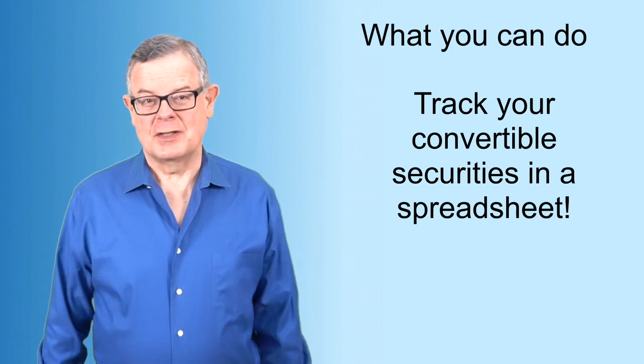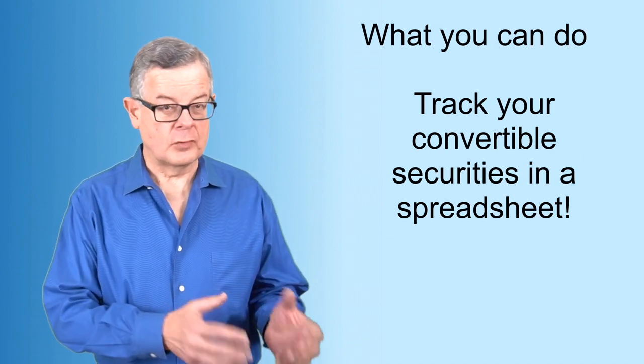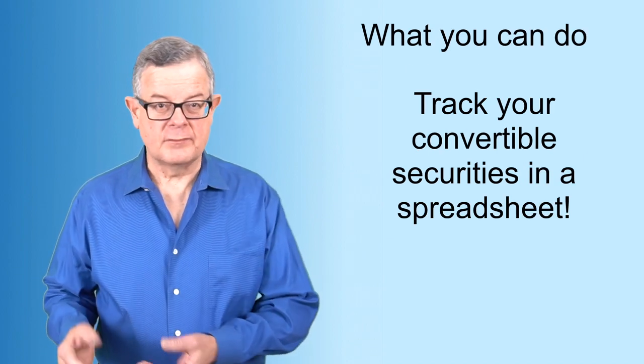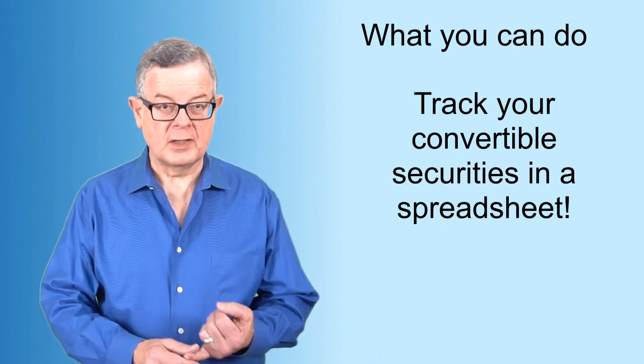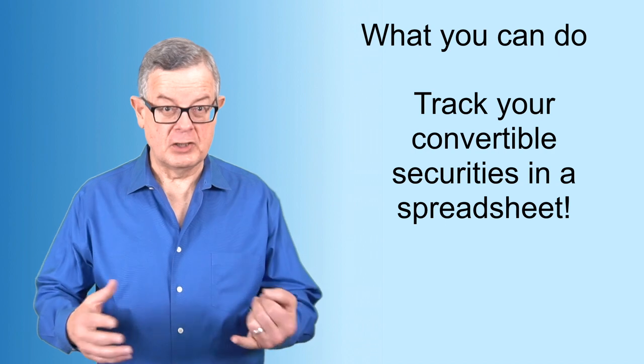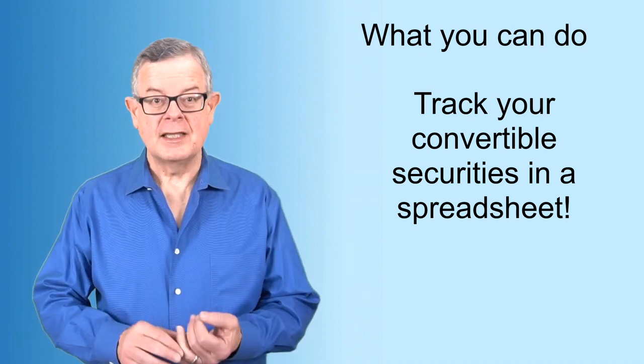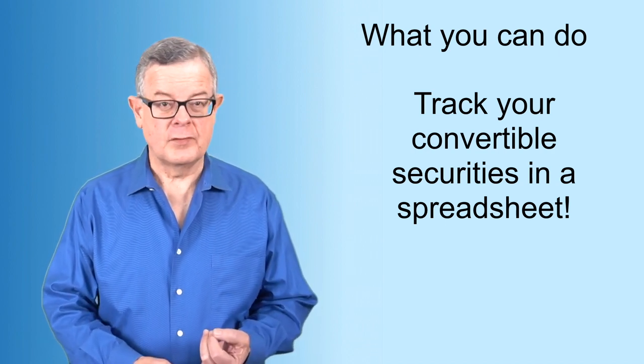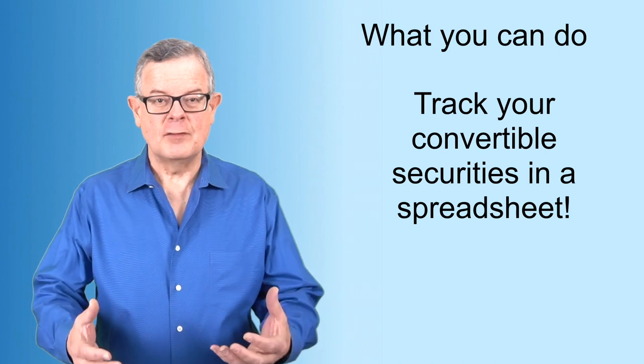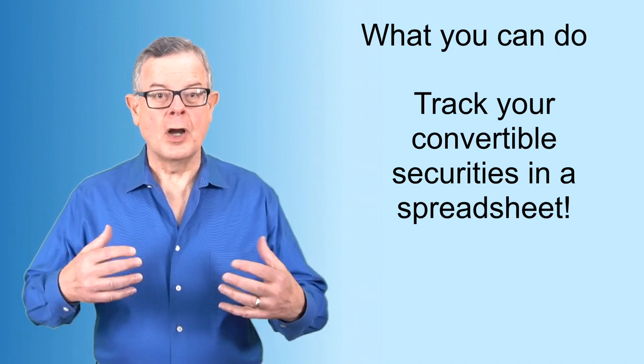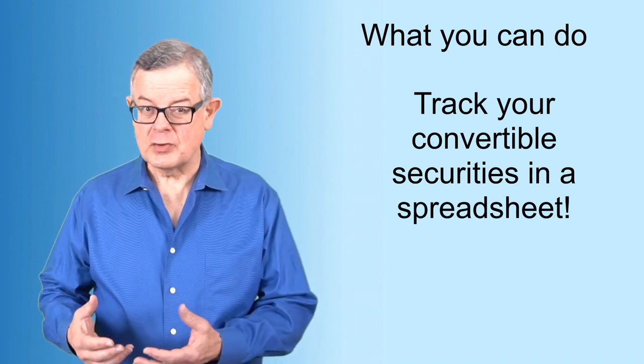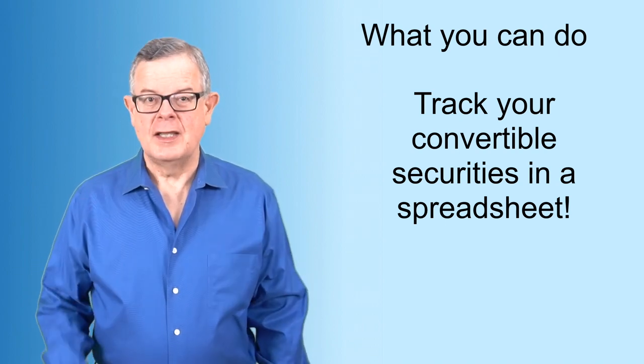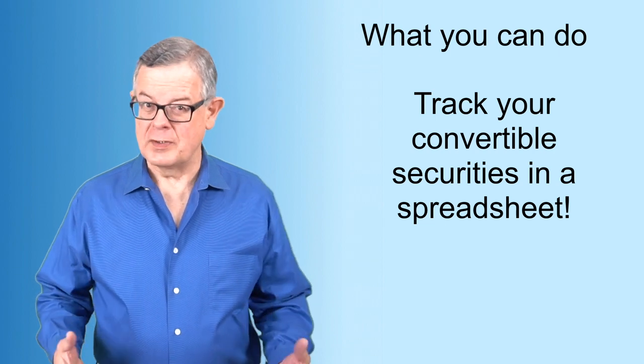Simple. Track your securities, track your convertible notes and your safes and keep track of what are the pre-money caps and what implications those have for additional shares, additional dilution. Keep track of the discounts for the same reason. Keep that information in front of you so that you're aware of how much money will be converting in the future when you do that priced round. If you keep track, you won't get surprised.